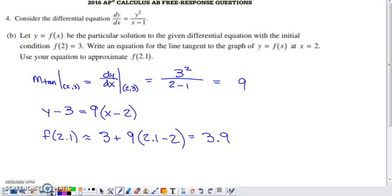In part B, it says that y equals f of x is our particular solution to the differential equation that has the initial condition when x is 2, the y value is 3. Write an equation for the tangent line to the graph of this solution curve at x equals 2, and then use that equation to approximate f of 2.1.